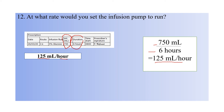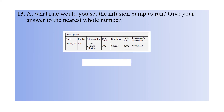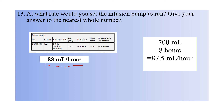Question thirteen: at what rate would you set the infusion pump to run? Give your answer to the nearest whole number. Route is IV infusion, fluid is 0.9% sodium chloride, volume is 700 mL, duration is 8 hours, start time 8 AM. The answer is 88 mL per hour. Divide 700 by 8 hours to get 87.5 mL per hour. As this rounds up at 0.5, the answer is 88 mL per hour.